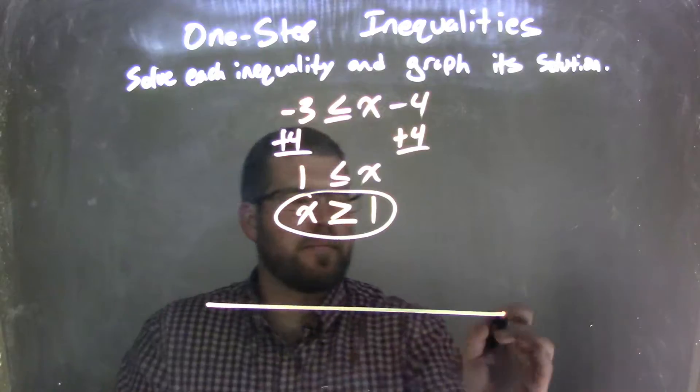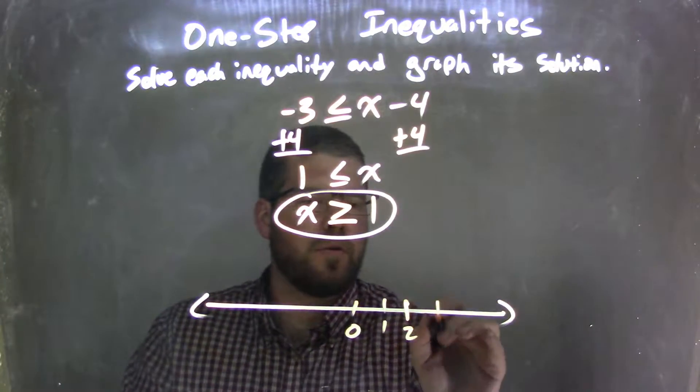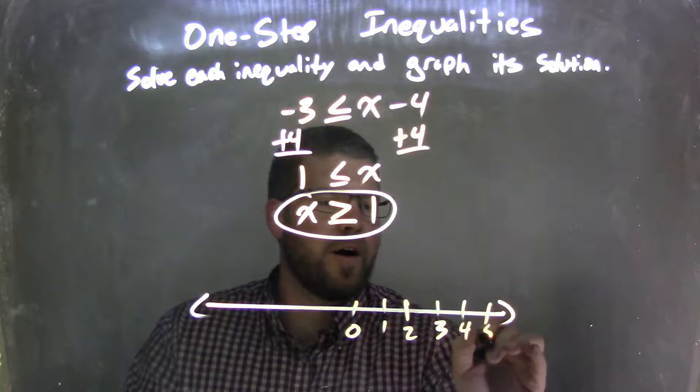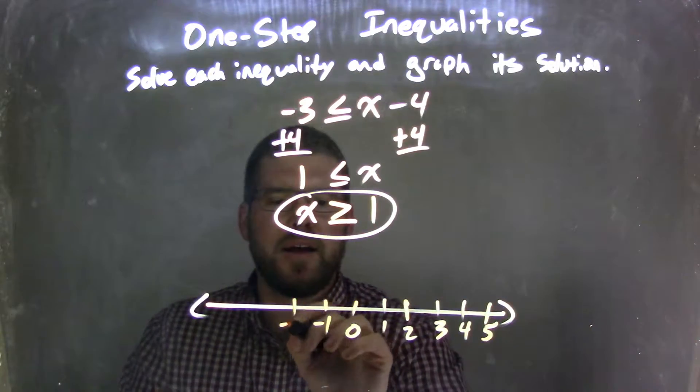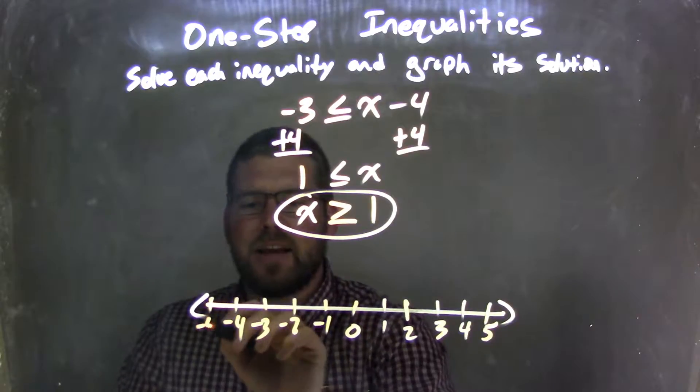Now I need to graph it. So I'll make a number line: 0, 1, 2, 3, 4, 5, and we have -1, -2, -3, -4, and -5.